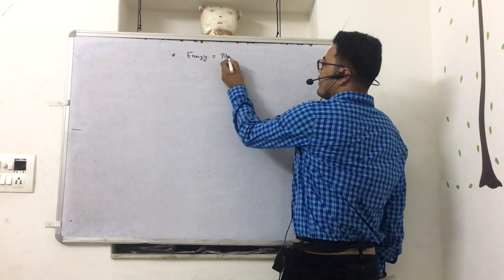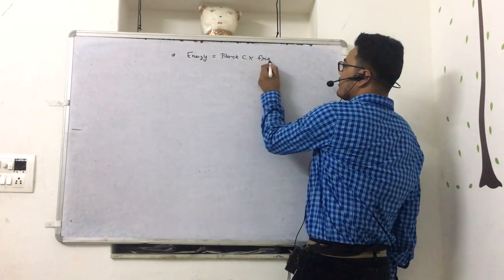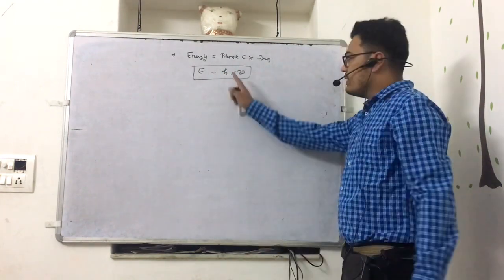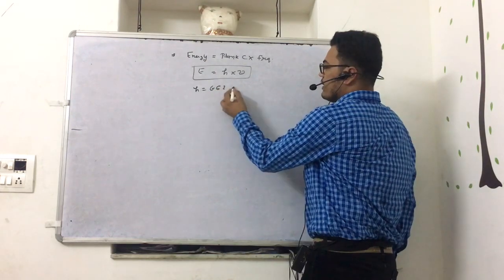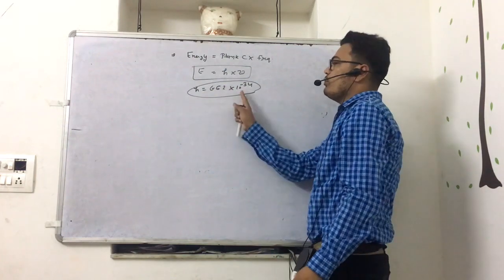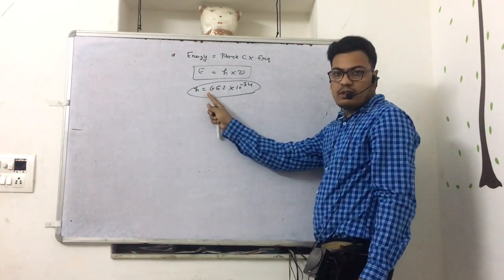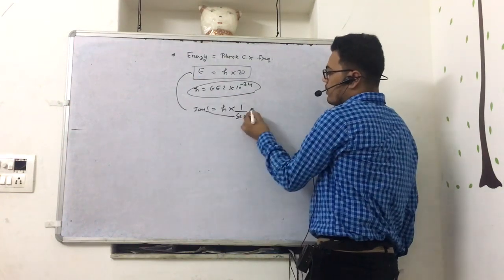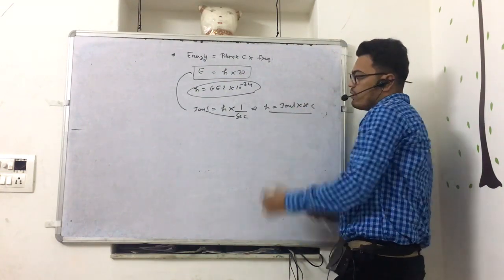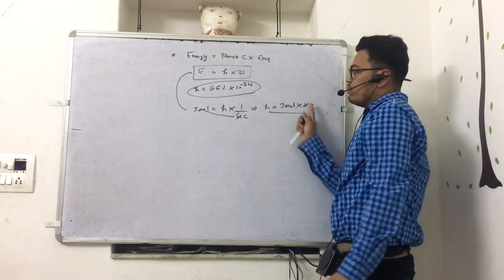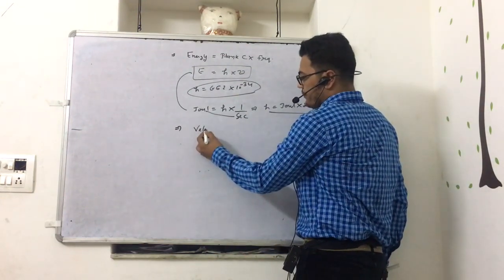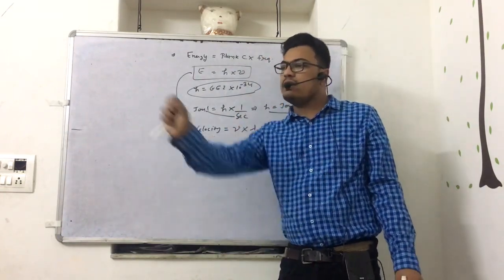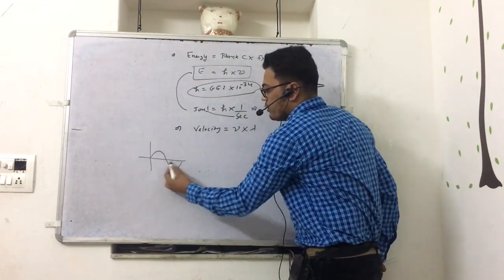Energy is also equal to Planck's constant h multiplied by frequency ν. So E = hν. The value of h is 6.6 × 10⁻³⁴. The unit of h: since E is in Joules and ν is in 1/second, h equals Joule into second. Also, velocity equals frequency times wavelength: C = ν × λ, so ν = C/λ.